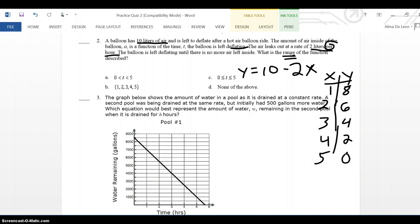So, what is the range? Well, at 0 hours, I had 10 liters of air. So, my range should be from 0 to 10 liters. Right? Because range is the y. And the biggest amount of liters of air that I could have in that balloon is 10, and the smallest amount is 0.